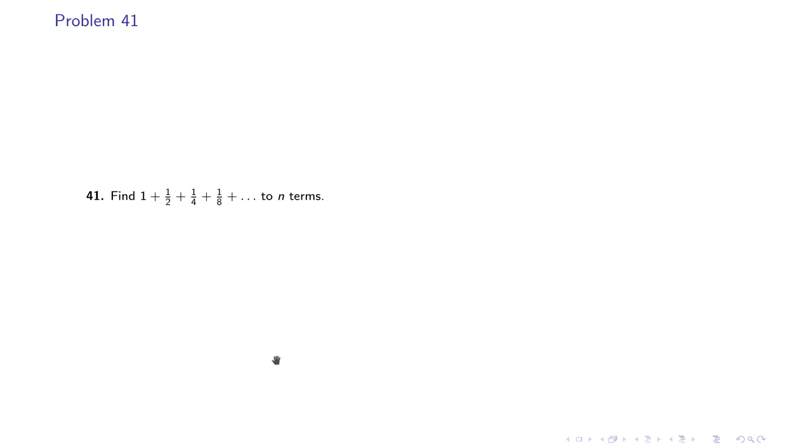Problem number 41 says that find 1 + 1/2 + 1/4 + 1/8 and so on to n terms. If you see this geometric progression, then the first term is obviously 1 and the common ratio is 1/2 by 1, which is 1/2, or 1/4 by 1/2 is again 1/2, or 1/8 by 1/4 is again 1/2.